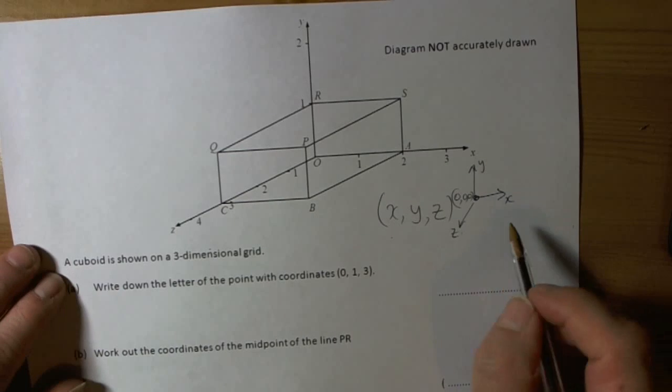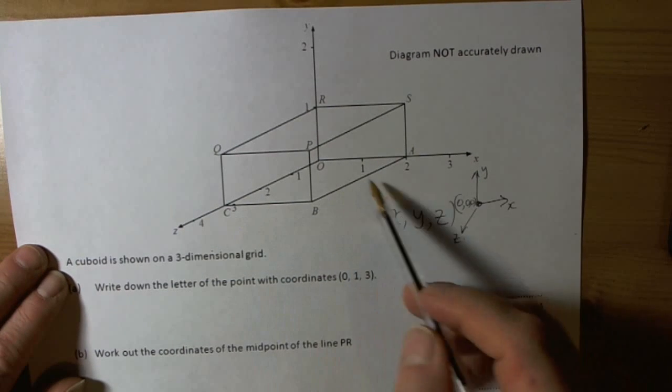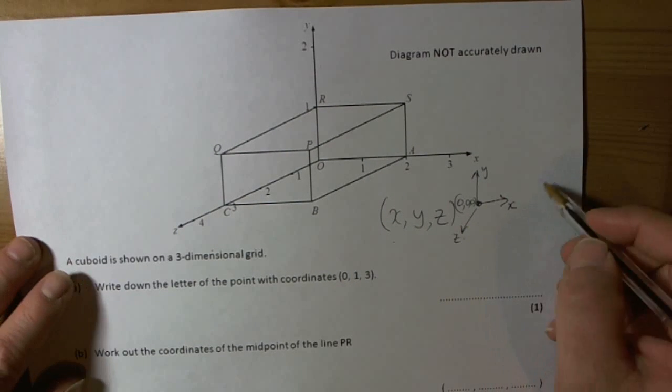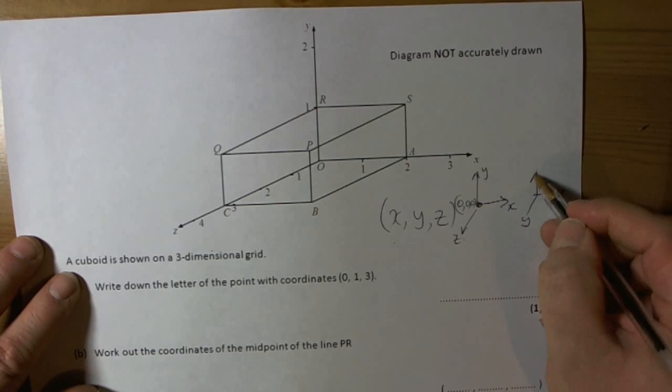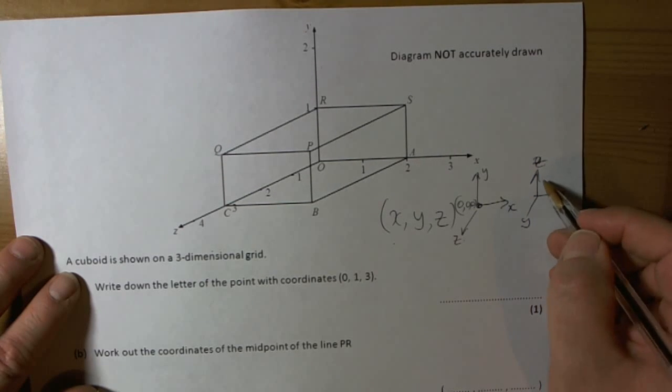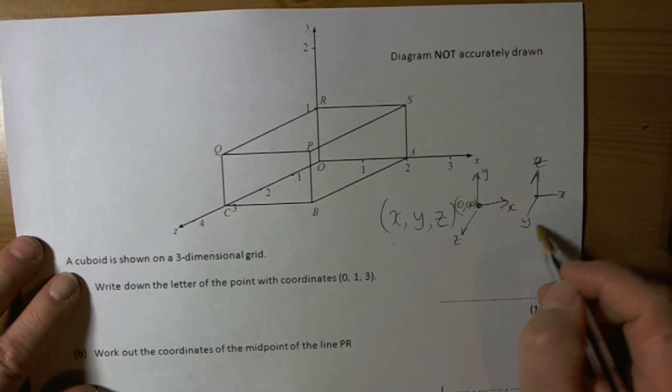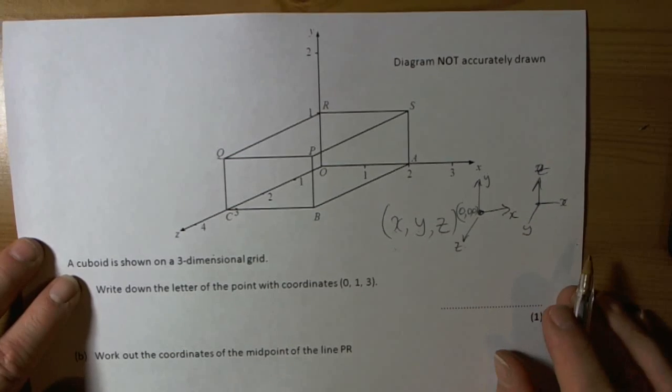Now you've got to watch for this because the 3D grid could be written in different orders. Sometimes we see X, Y, and then the Z is the one coming out of the paper. So again, you've got to follow the order of the letters X, Y, Z and follow those directions to do your coordinates properly.